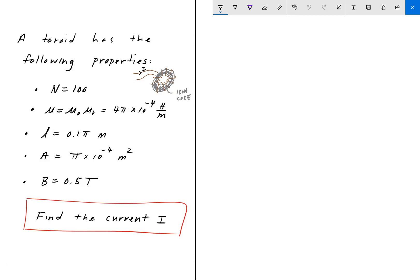Hey everyone, welcome back to Engineering Education. For this next problem, we have a toroid that has the following properties. If you don't know what a toroid is, I drew a little picture here. It's essentially an iron core donut with some wire wrapped around it.